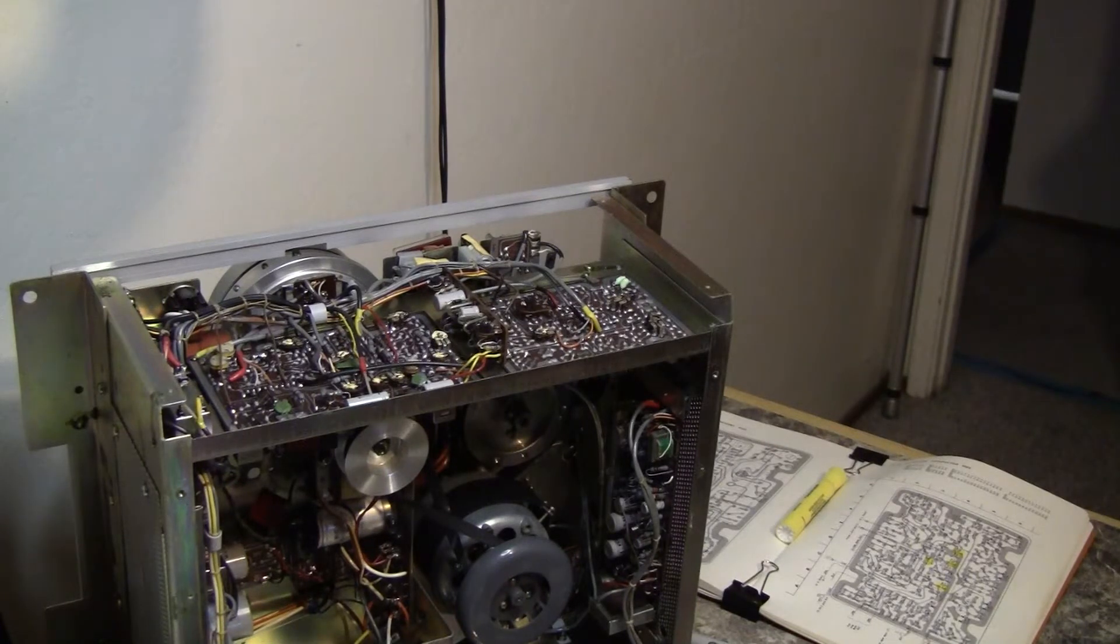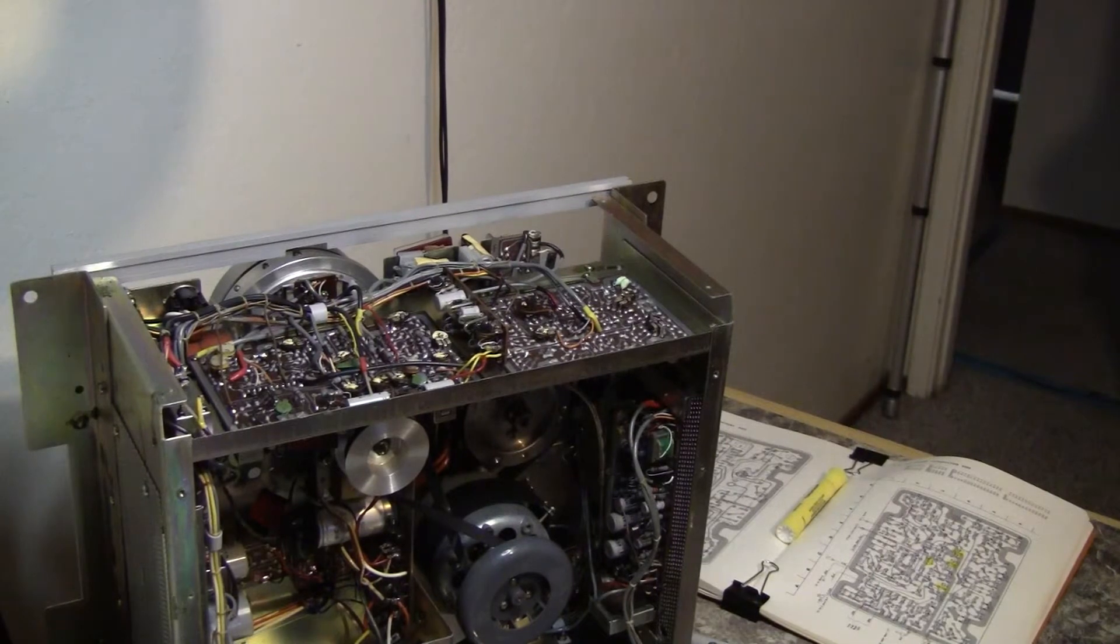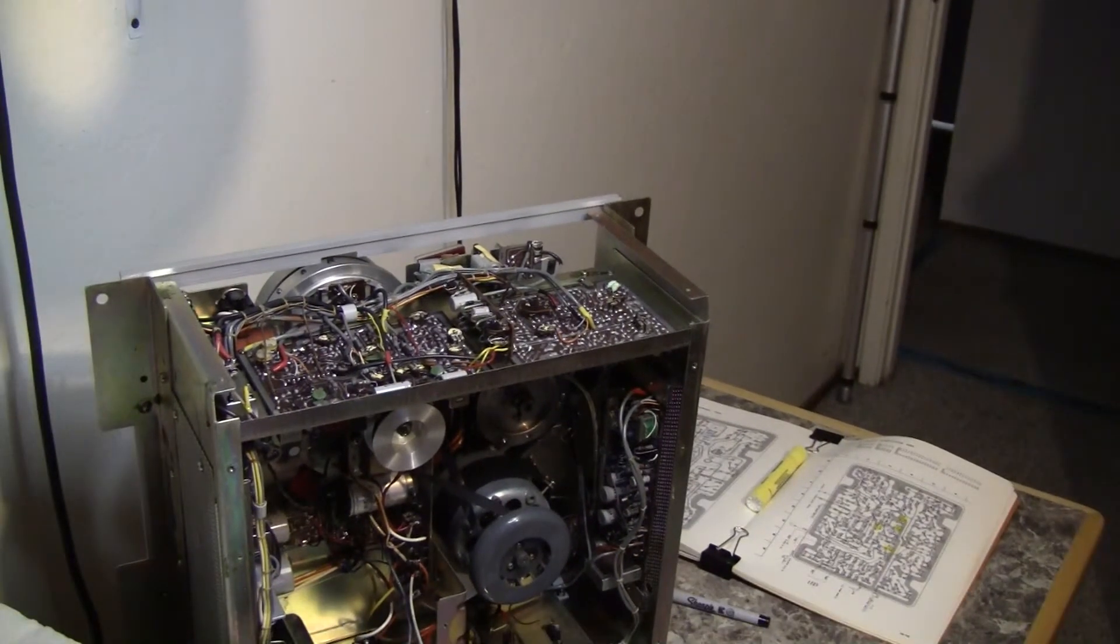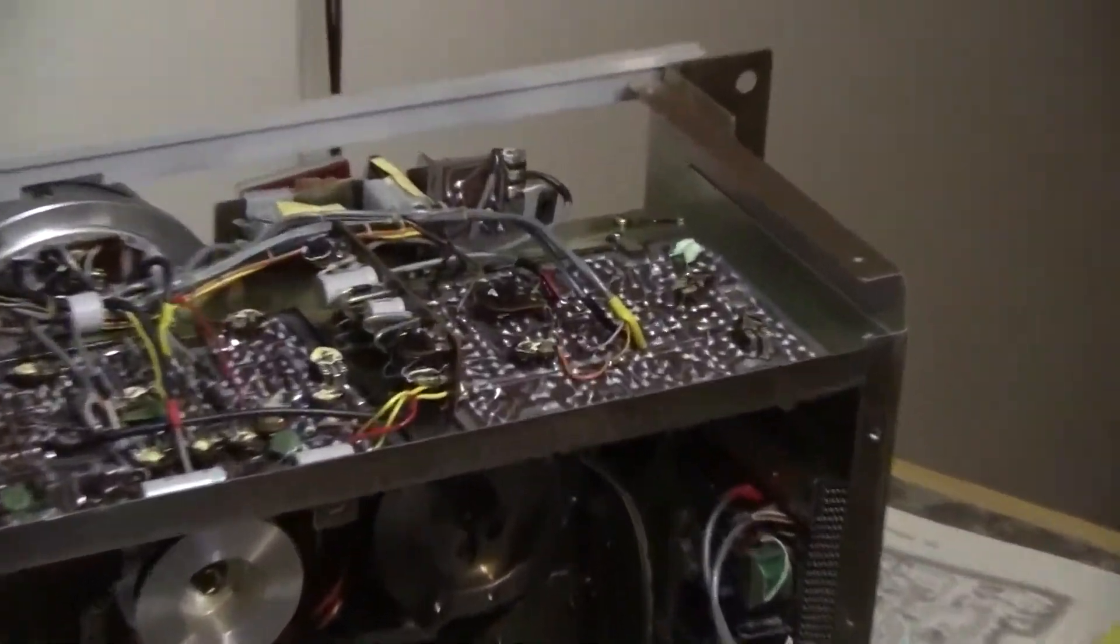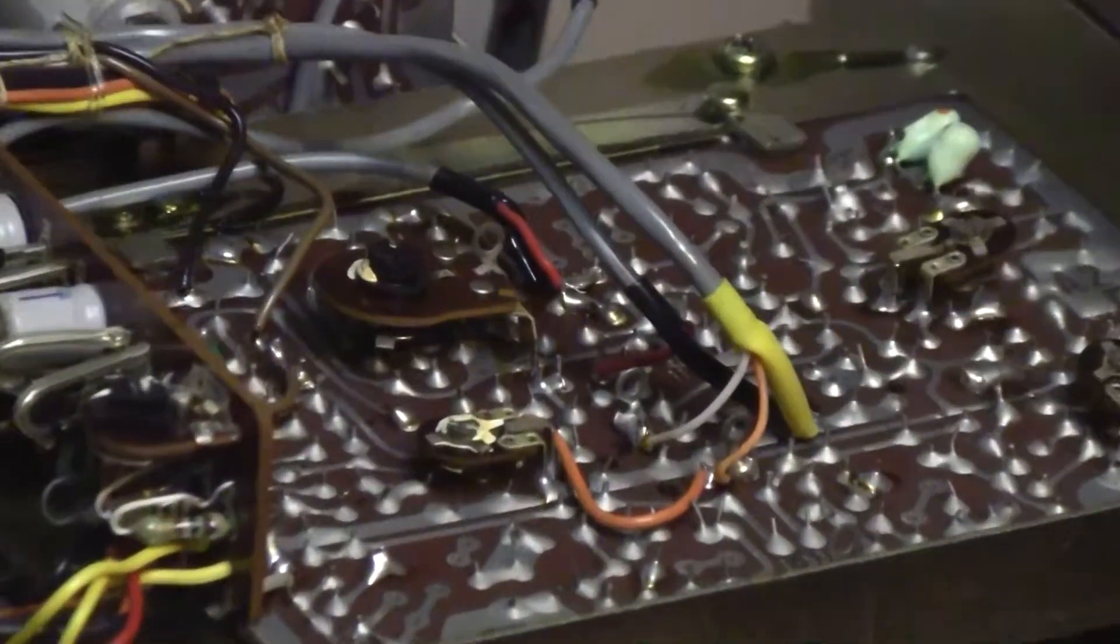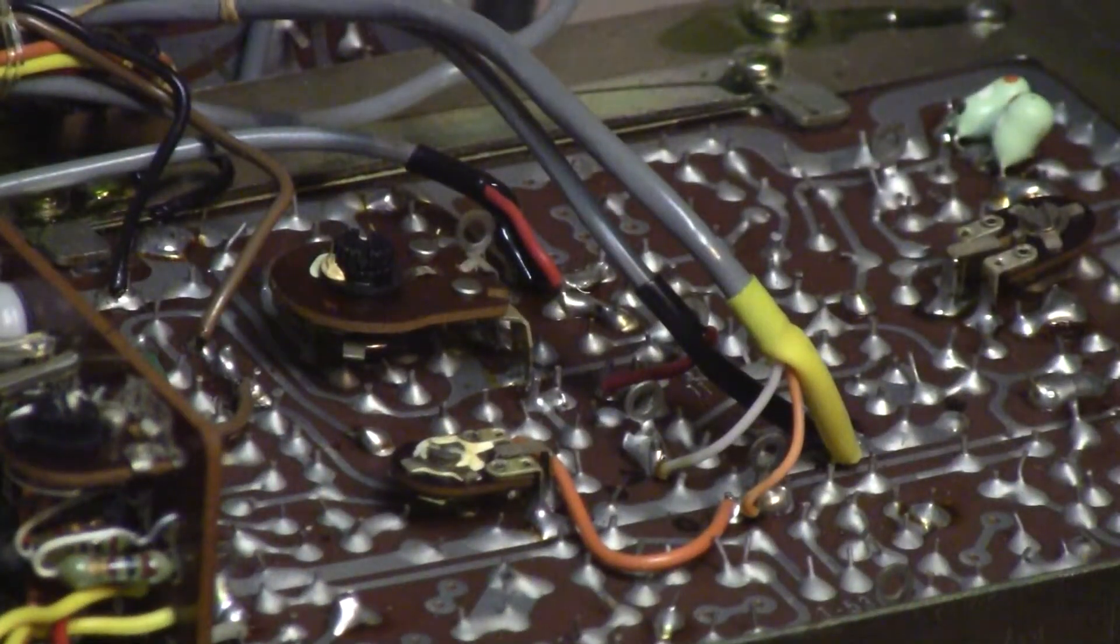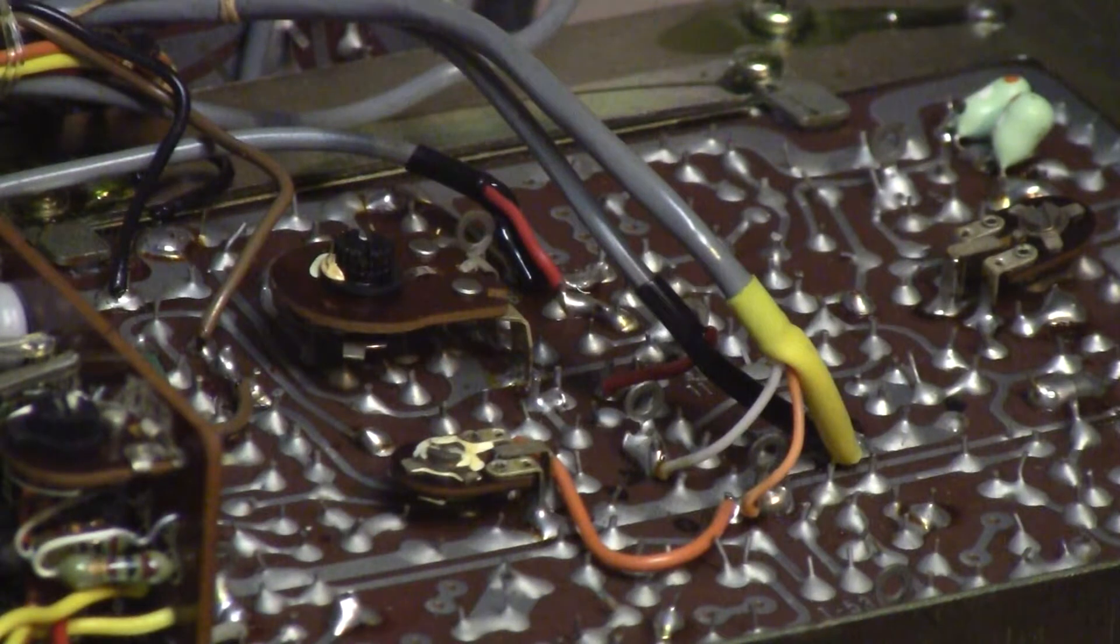So the first step is to disconnect the two shielded cables, the one with the white and orange wire, and the one that you can't see very well behind it.